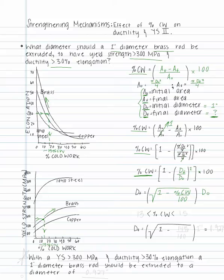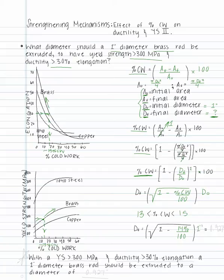Based on this information, we can conclude that the window of percent cold work that corresponds with the adequate yield strength and ductility is between 13 and 15% cold work. For the purpose of this problem, we will choose 14% cold work to finish the calculations. Plugging in 14% cold work divided by 100 and 1 inch for d-naught, we can calculate the final diameter, which is approximately 0.927 inches.